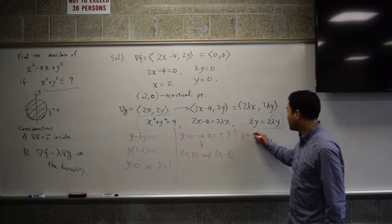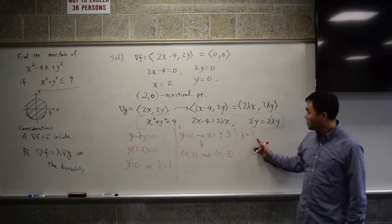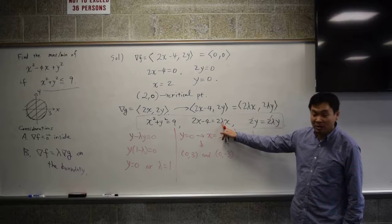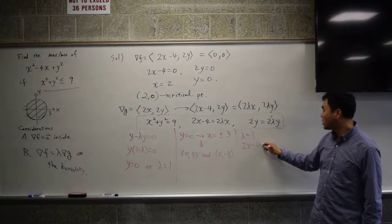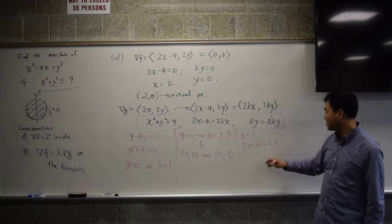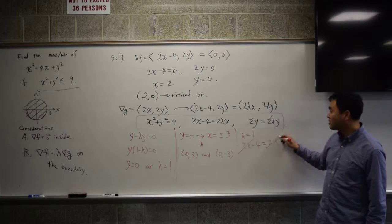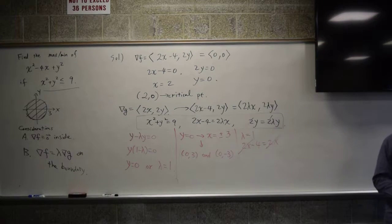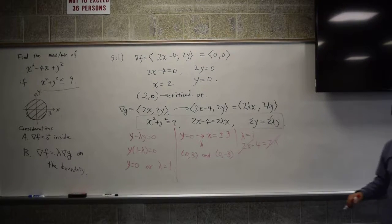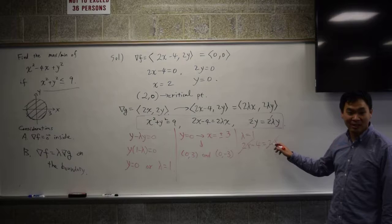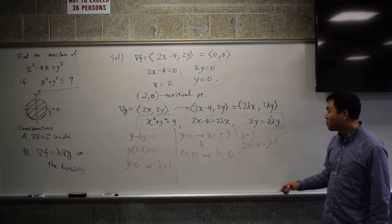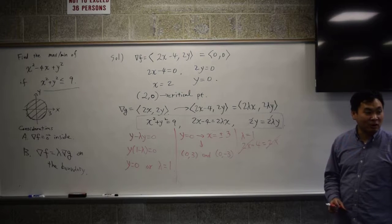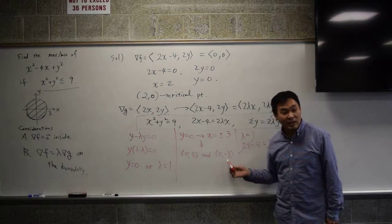Now let's go for lambda equal to 1. If lambda is 1, then this is easier to use. So we put 2x minus 4 equals 2 times x. Oh, what happens then? It can't work. It can never work. So it's not possible. So therefore, these points are called Lagrange points. There are two Lagrange points on the boundary, and there's one critical point inside.